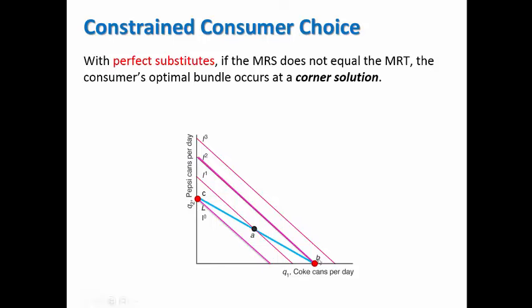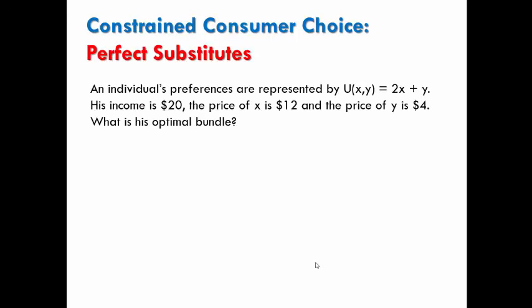But what's different here is we don't have a point of tangency. The optimal bundle is not going to be, in this case, where the MRS equals the MRT.